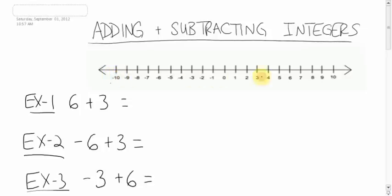One is using a number line, and the other way is just using common sense. Let's look at this fairly simple question using the number line. How do you do 6 plus 3 on a number line? And a lot of you are thinking, really? We're going to do 6 plus 3?